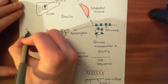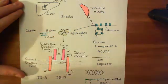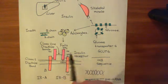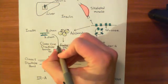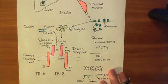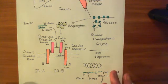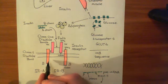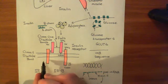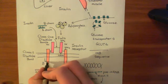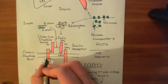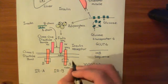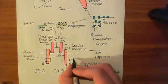The insulin molecule will bind to the extracellular domain of the insulin receptor, between the two alpha subunits. This activates the insulin receptor — specifically, it activates certain special domains on the cytoplasmic sides of the beta subunits, known as tyrosine kinase domains.